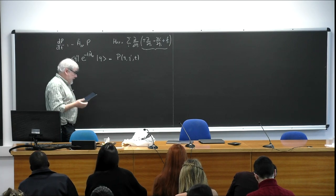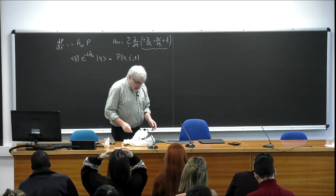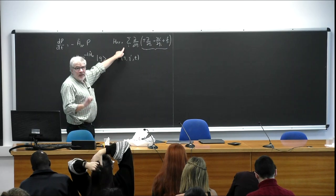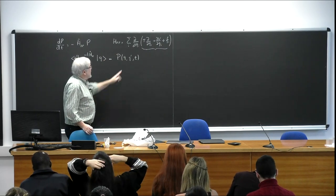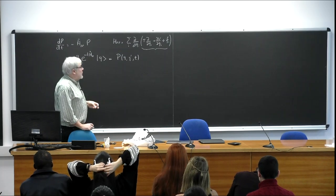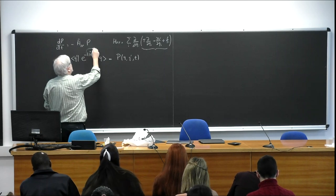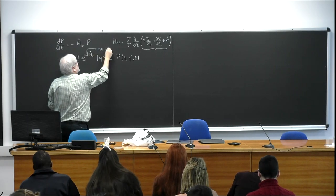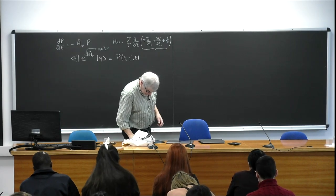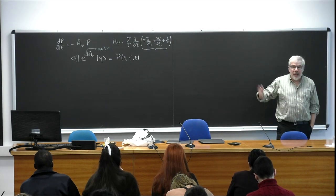The first point — and I'm going to repeat this a few times — notice that although this resembles Schrödinger a bit, it has a second derivative but it also has a first derivative, which Schrödinger doesn't have. There is no i here, and that's very important. Schrödinger has an i there.